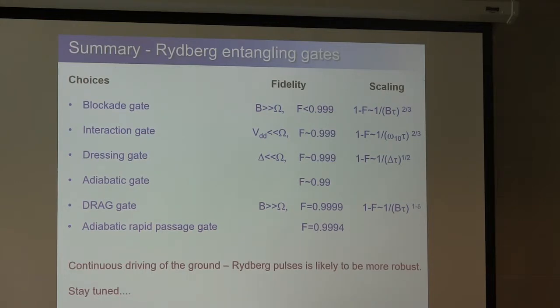And just to summarize, I've gone through a lot of different gate approaches. Certainly, we know how to design gates now with fidelity that's really in the scalable regime for quantum information. And it's likely that continuous driving of the ground Rydberg pulses can be more robust. There's certainly data that indicates that. And we'll see if we can beat down all the experimental technical problems and get this to work. Thank you.